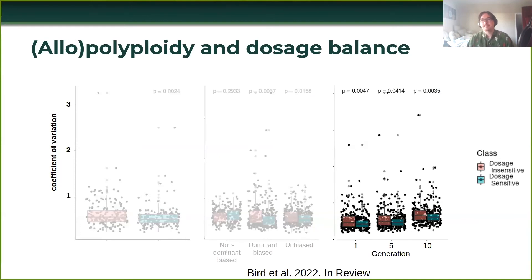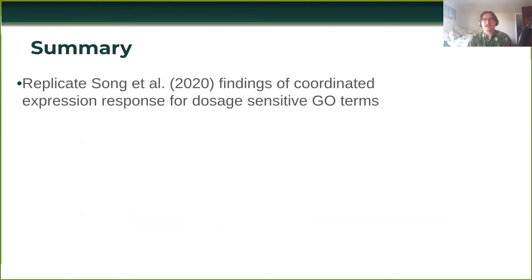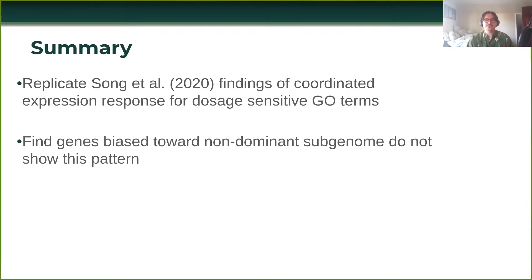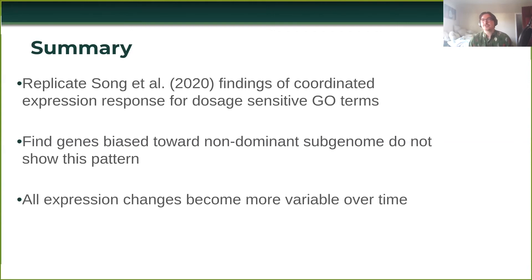Finally, we have the time component. When we look across the generations, we see across all of them the same result: dosage-sensitive GO terms have a more coordinated expression response and less variance in expression response. But overall there is an increase in variance of expression for everything — both dosage-insensitive and dosage-sensitive. So to summarize: we replicate Song et al.'s findings of a coordinated expression response for dosage-sensitive GO terms; genes biased towards the non-dominant subgenome do not show this pattern; and all expression changes observed appear to become more variable over time.